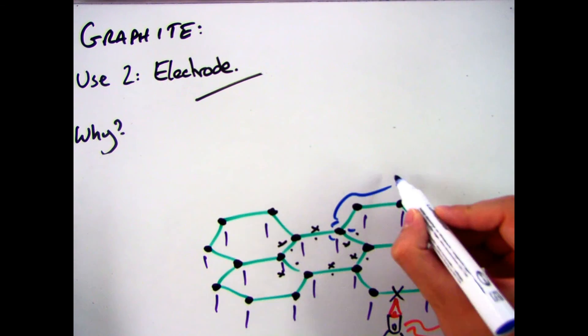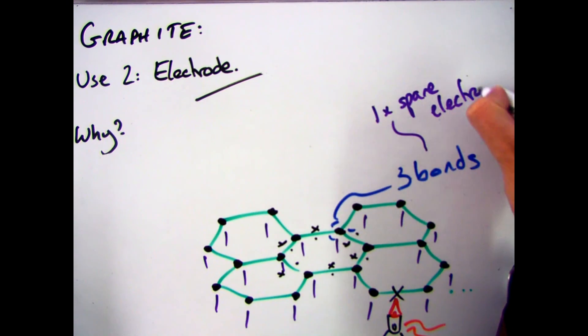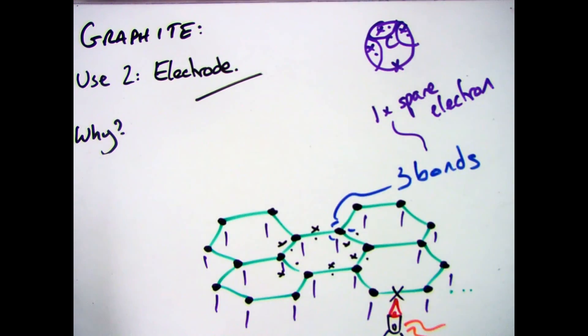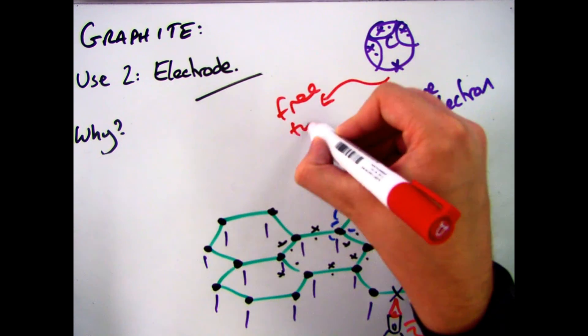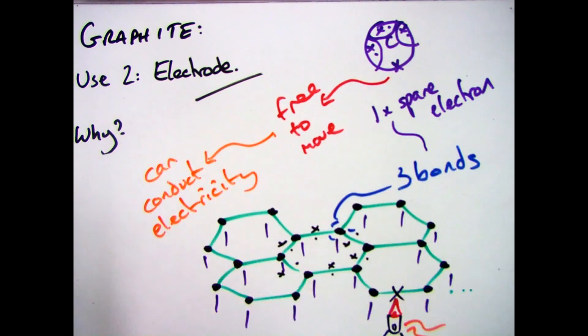The second major use of graphite then, is in electrodes. Now we've already talked about that we have three strong covalent bonds. And as a result of that we have one spare electron. That electron is free to move, therefore it can conduct electricity. Which makes it ideal for use in electrodes.